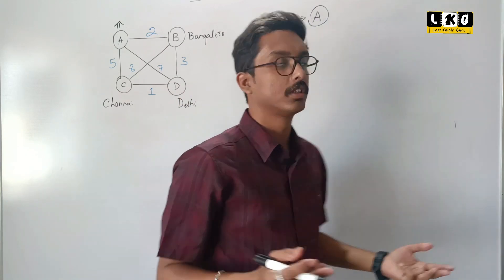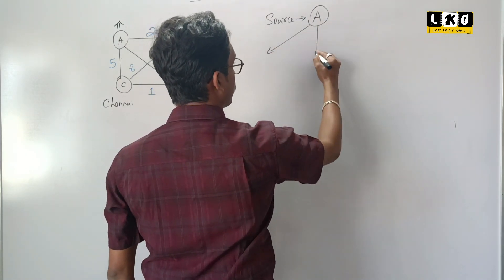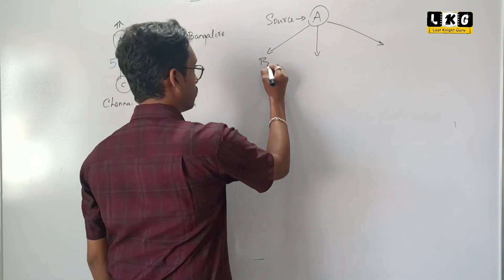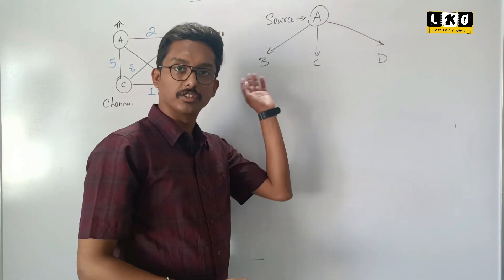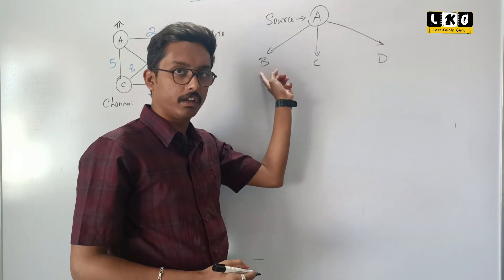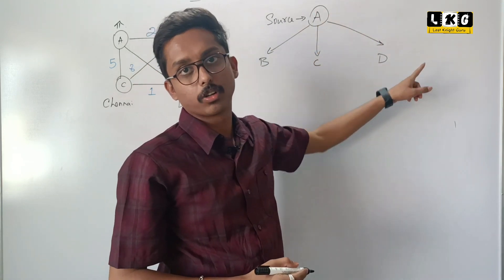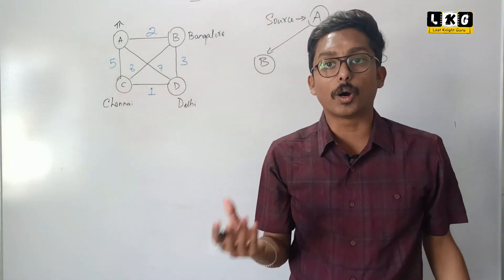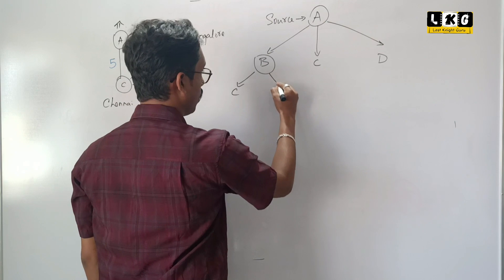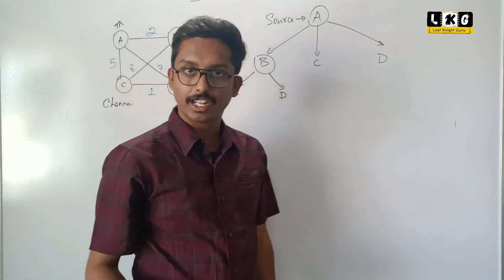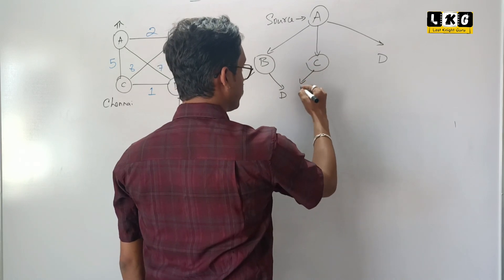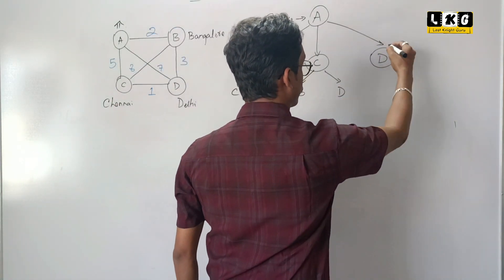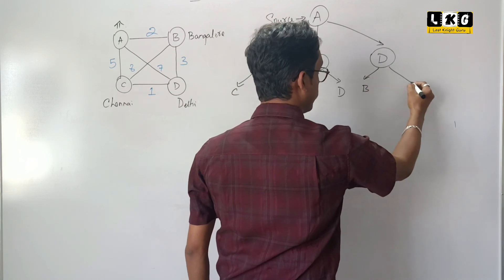What are the possible ways he can go? From A, he can go to three possible cities: Bangalore, Chennai, or Delhi — that is B, C, or D. From A, he can go to B; from A, he can go to C; from A, he can go to D. Once he goes to B and reaches B, the other two options are: from B, either he can go to C or he can go to D. Same thing — if he reaches C, then from C, either he can go to B or he can go to D. Then from D, if he reaches from A to D first, then either he can go to B or he can go to C.